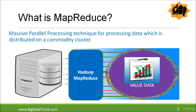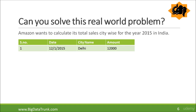Let us see one real-world problem to understand this concept easily. Amazon wants to calculate its total sales city-wise for the year 2015 in India. In a traditional computing environment, you might solve this using a hash table where the key is the city name and the amount is the value. But if you run this on 1TB of data which Amazon has, it will take a long time to read and process — it may even run out of memory. Because of the huge amount of data, Amazon wants to use the MapReduce technique to solve this problem.